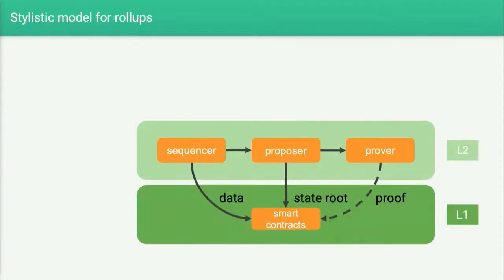Before going into detail on these properties and how they relate to MEV, I'll use this stylistic model for how I think about rollup systems. You have the L2 system with a separation of roles between operators. Sequencers are responsible for building blocks and sequencing transactions, and they post the block or data batch to L1. Proposers are responsible for executing and updating the state root on L1, and provers essentially check validity.